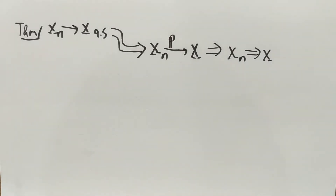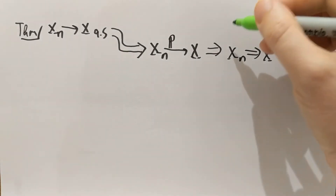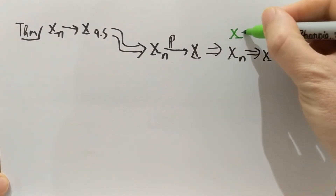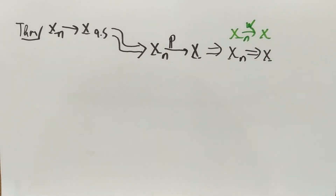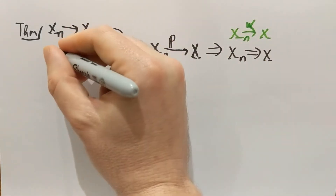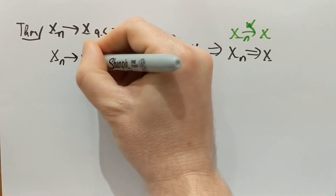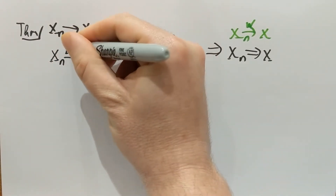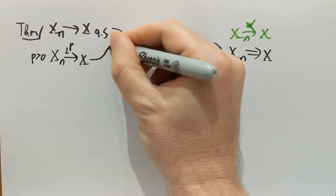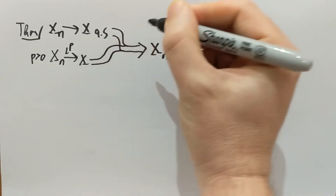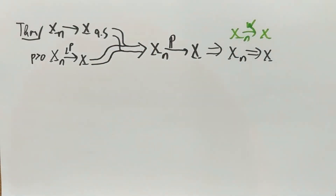Remember, we had two notations for weak convergence: Xn going to x weakly, or we also denoted this by a W over the arrow — same thing. Furthermore, Lp convergence — Xn going to x in Lp for any p positive — also implies in-probability convergence. That's the theorem I want to prove.